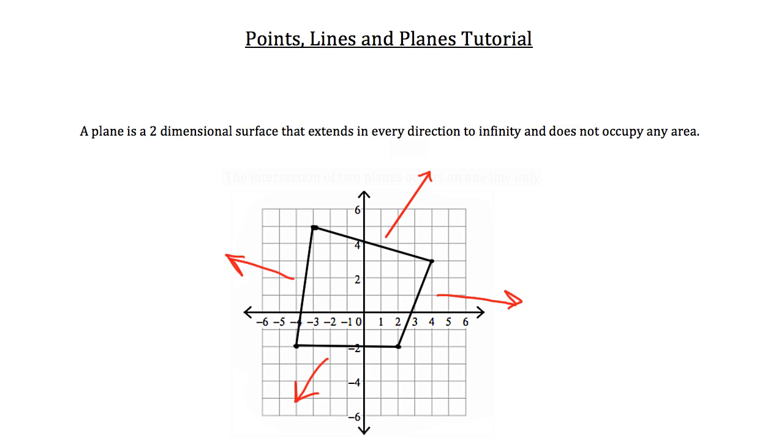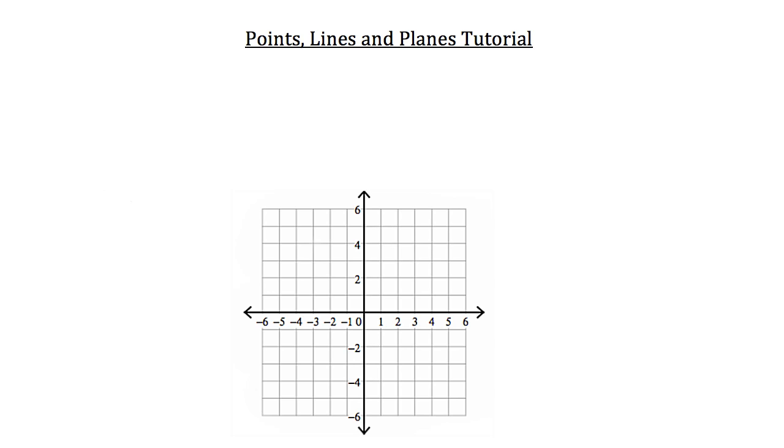Now what do you think happens when two planes intersect? Well when two planes intersect what we get is the formation of a line, because the intersection of two planes occurs on one line only. So I'm going to remove the graph and we'll draw two planes so you get an idea of what we're referring to.